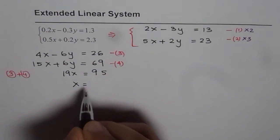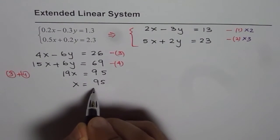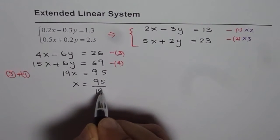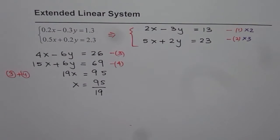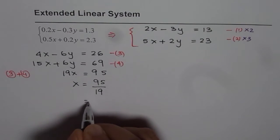So x is equal to 95 divided by 19. So we get a value for x, which is 95 divided by 19. So we can use calculator. Decimal value, 95 divided by 19 gives us 5. So this is equal to 5.